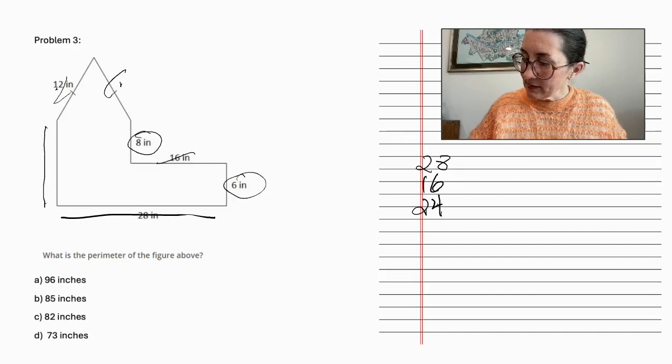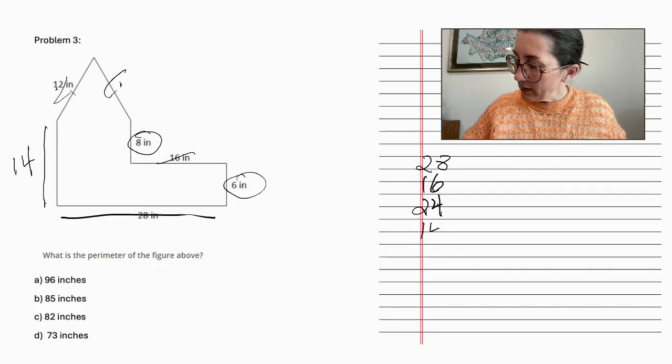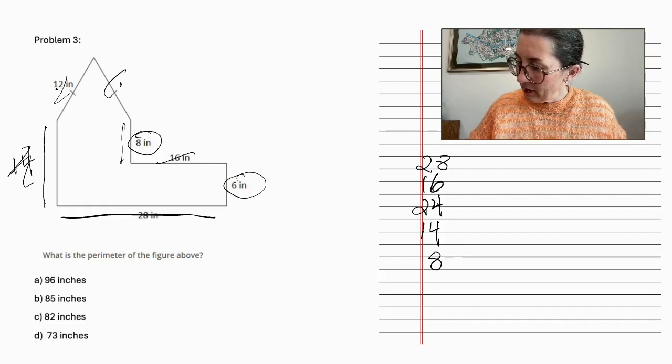Then this side is unknown, but we can add 8 plus 6, and we get 14, so that is 14. Then we have the 8 there and the 6 there.